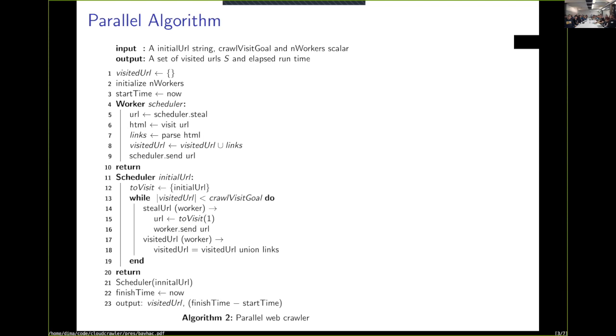and then they would send back to the scheduler the URL that they visited. And then the scheduler, when it initializes, starts off getting the initial URL. As long as it hasn't hit the total visit count, it would basically just wait on messages from workers. If a worker is trying to steal a URL, it would give that URL to the worker.